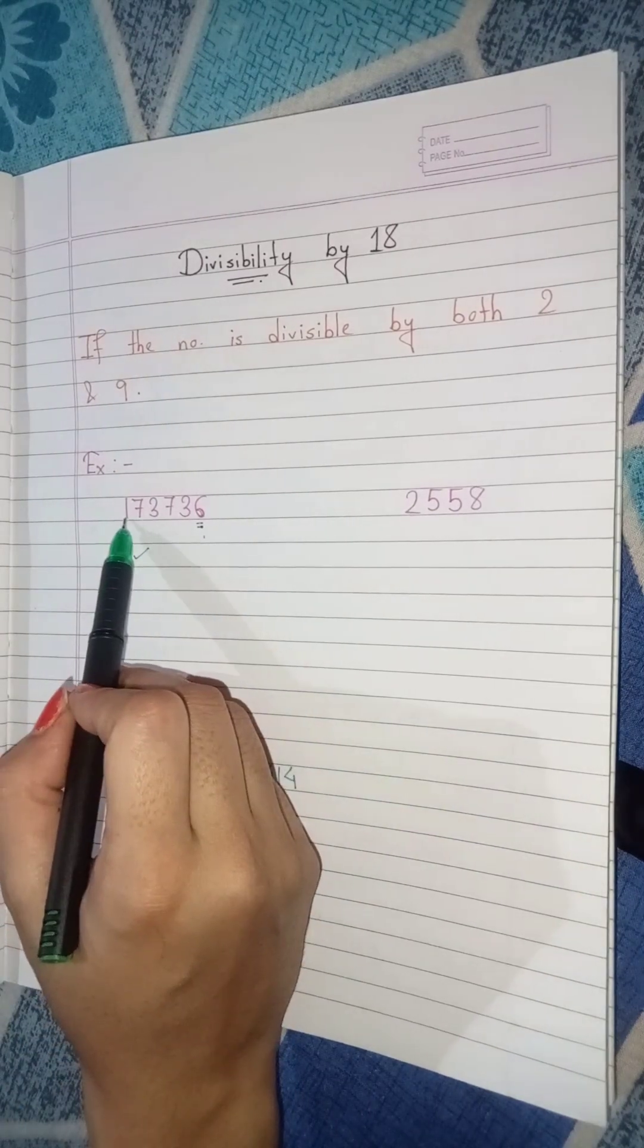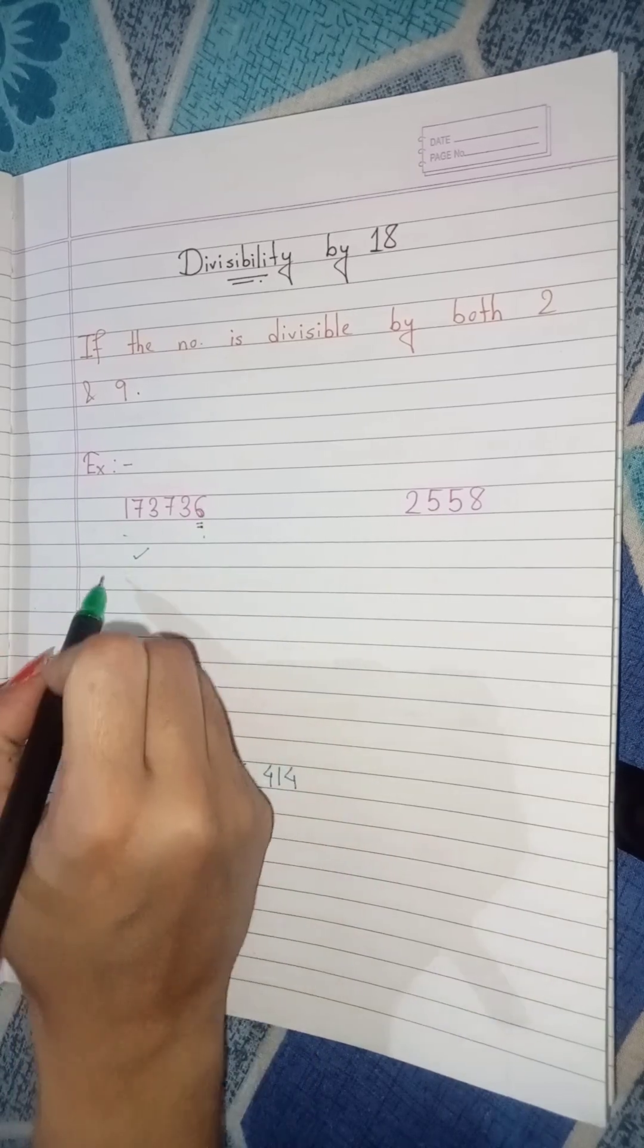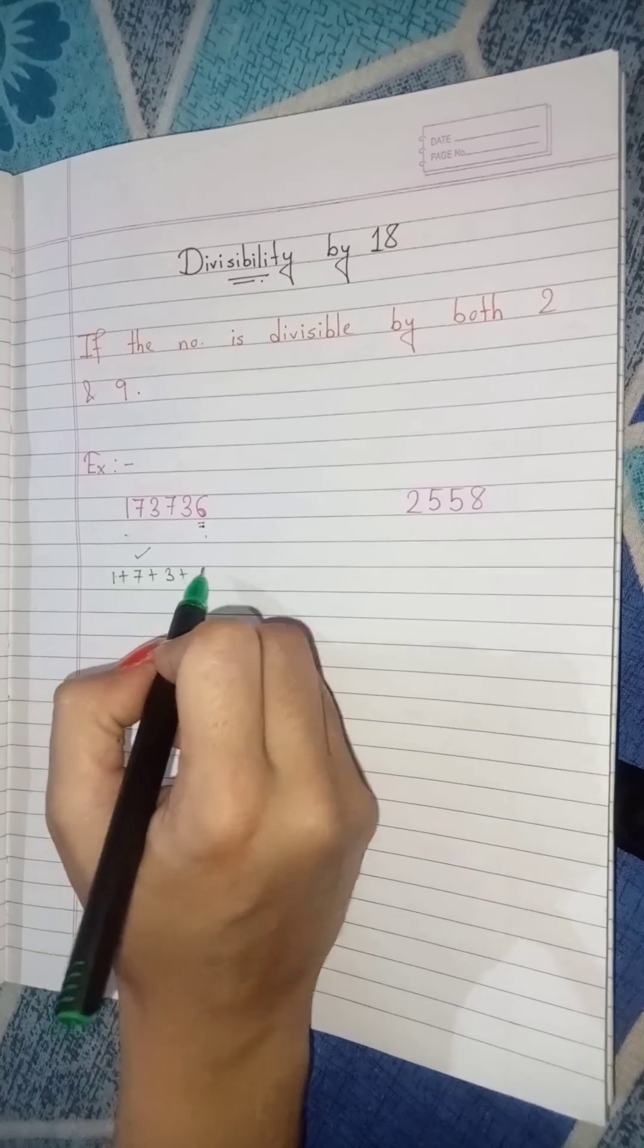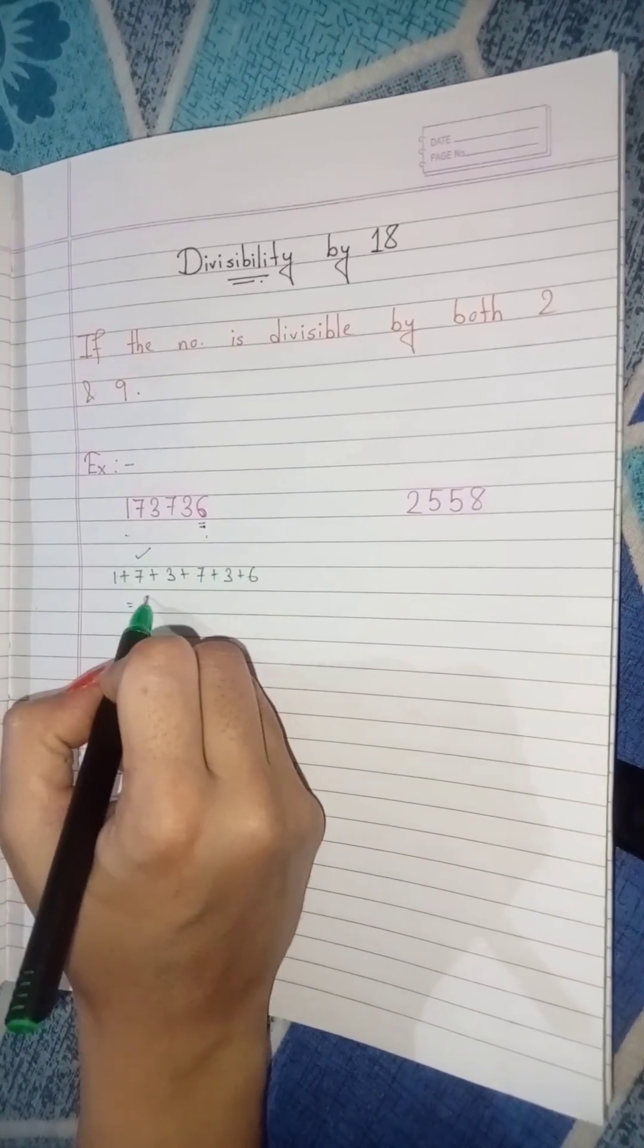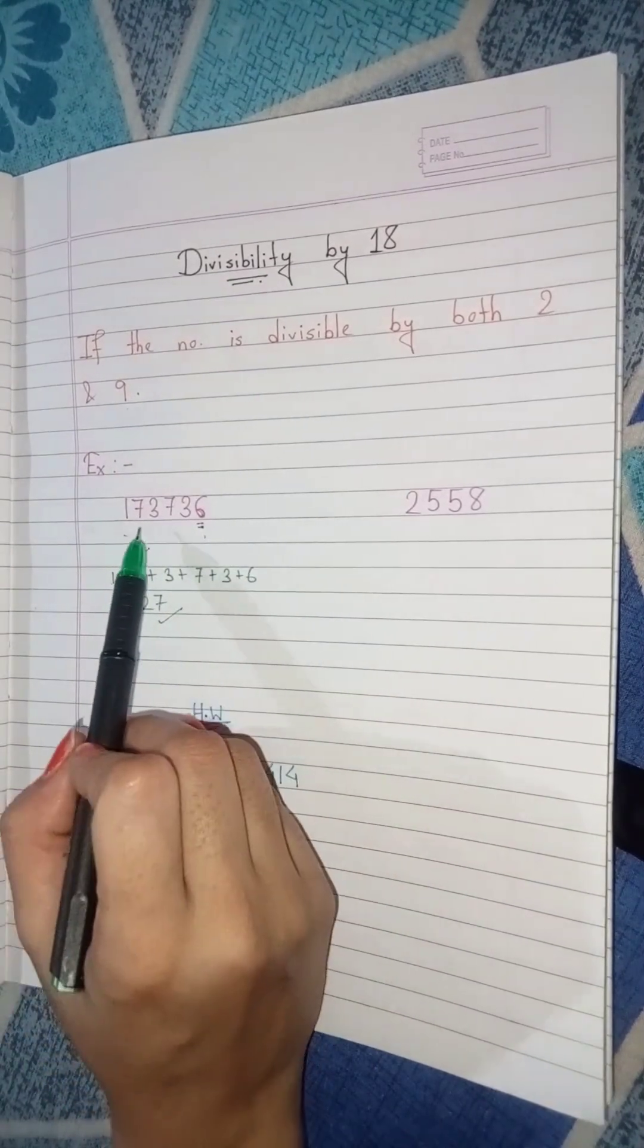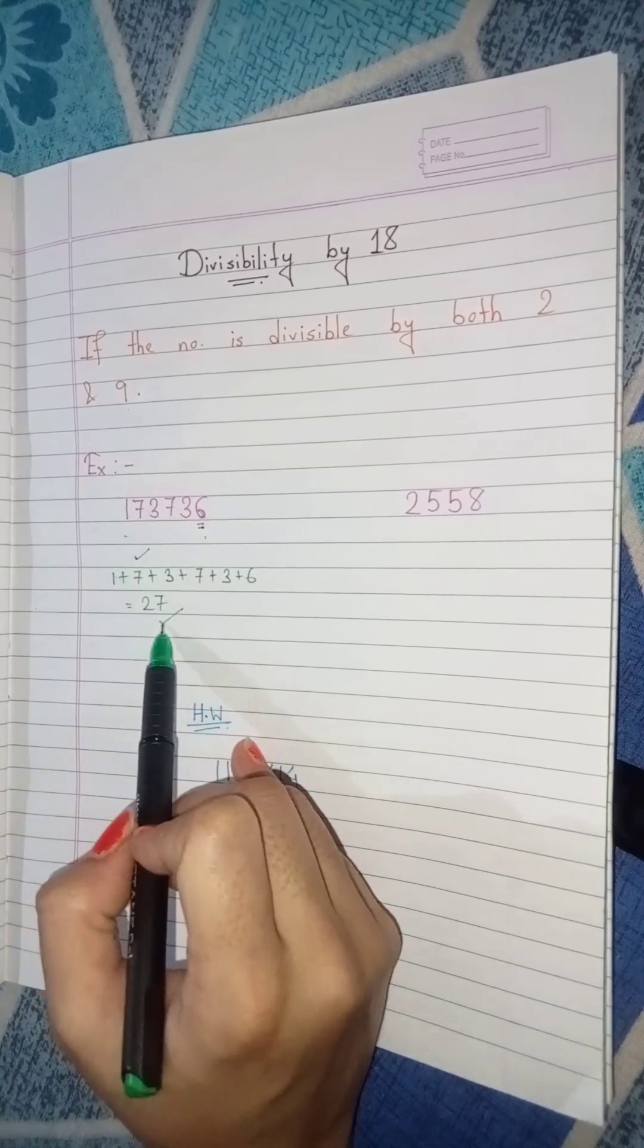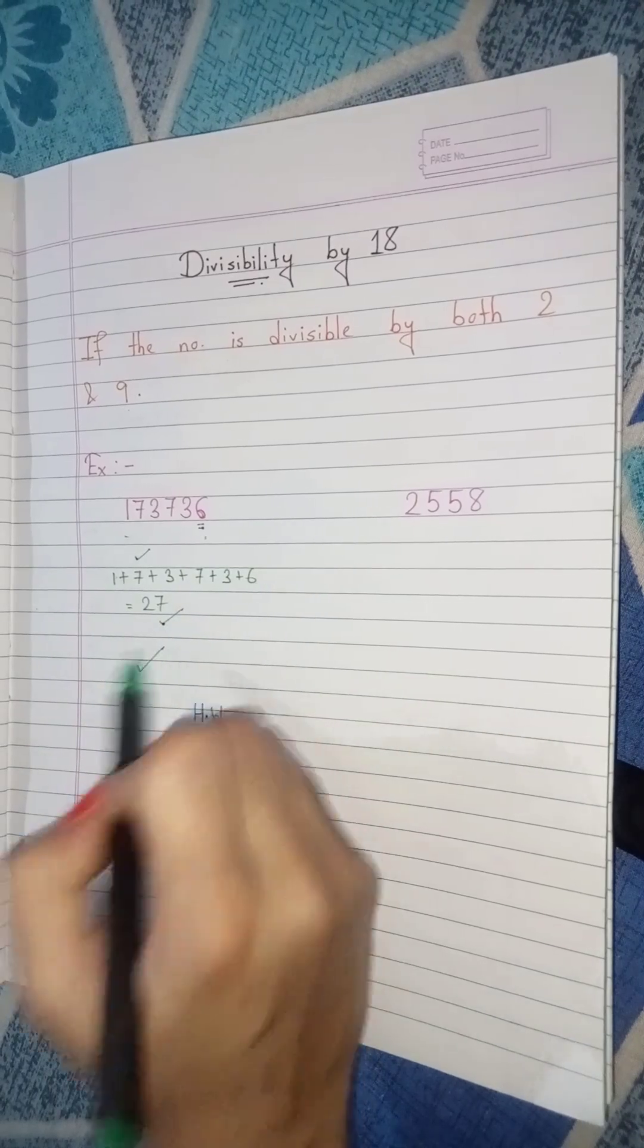Next we add the digits of the number. We get 1 plus 7 plus 3 plus 7 plus 3 plus 6. We get 27. This is divisible by 9. Since the number is divisible by both 2 and 9, the number is divisible by 18 also.